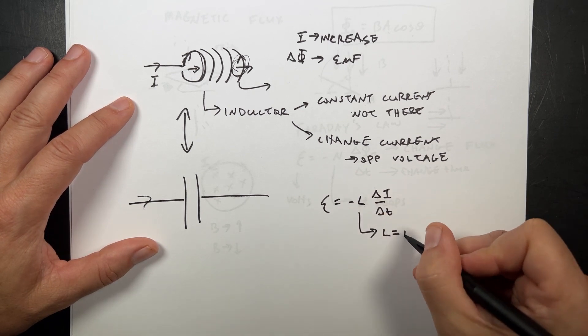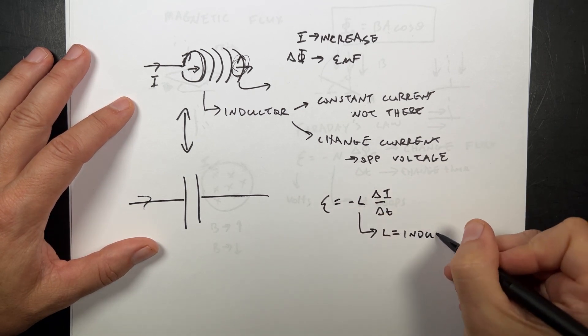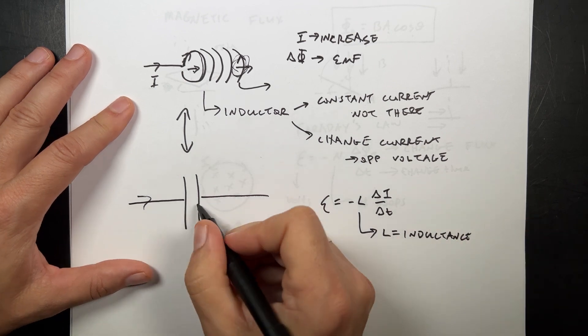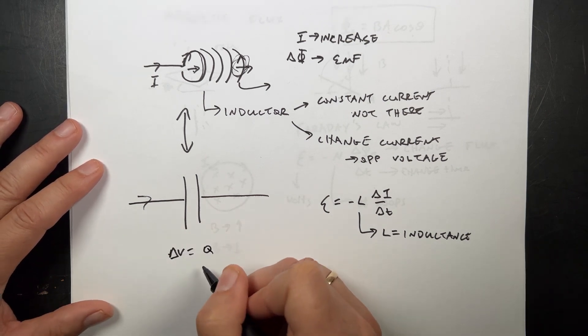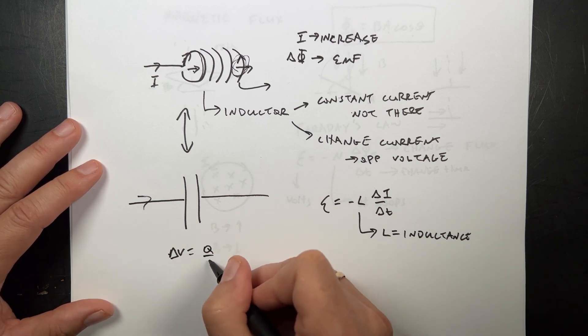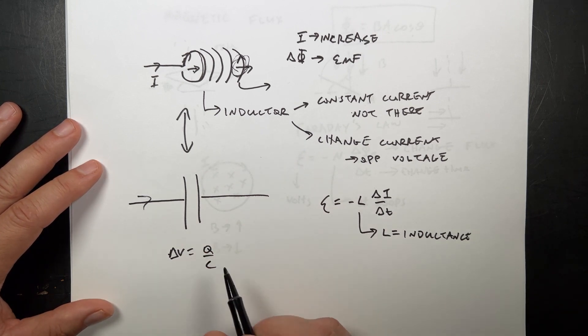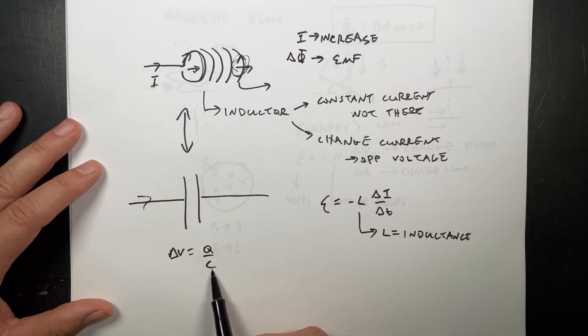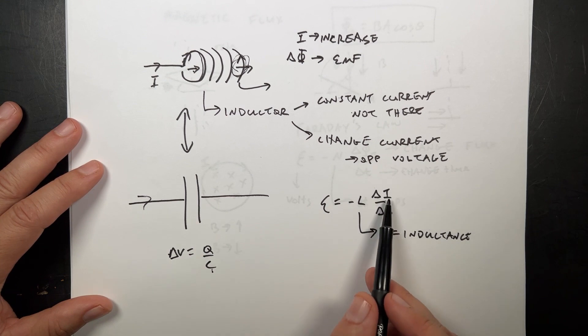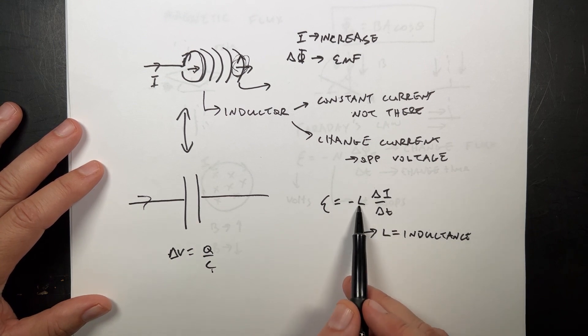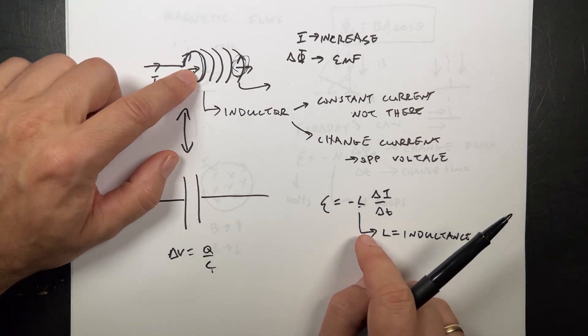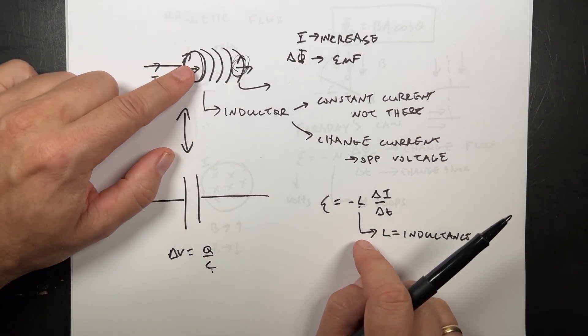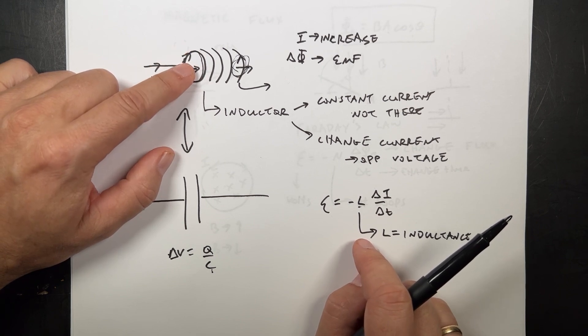where we call L the inductance. Just like, delta V equals Q over C. That's right. C is Q over V. Where that's the capacitance, and that's the charge in the plate. So, this is the current, the change in current, and that's the physical parameters of this coil of wire, the inductor.